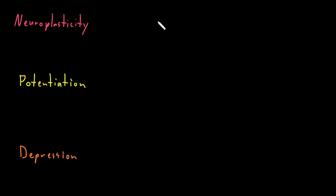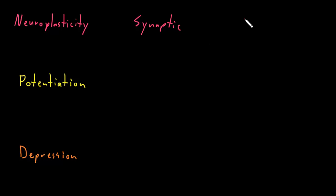Neuroplasticity can happen at the synapse, which we can call synaptic neuroplasticity. Or neuroplasticity can occur at the level of entire cells, where the total number of synapses between a neuron and its target cell are changed. This we could call structural neuroplasticity.